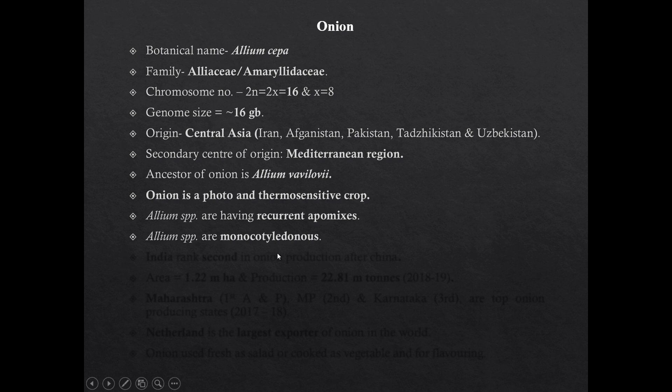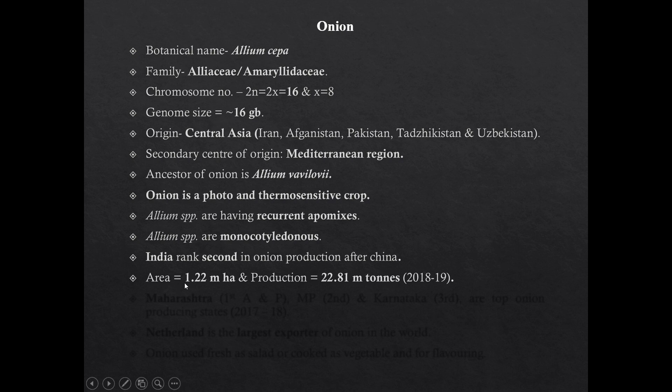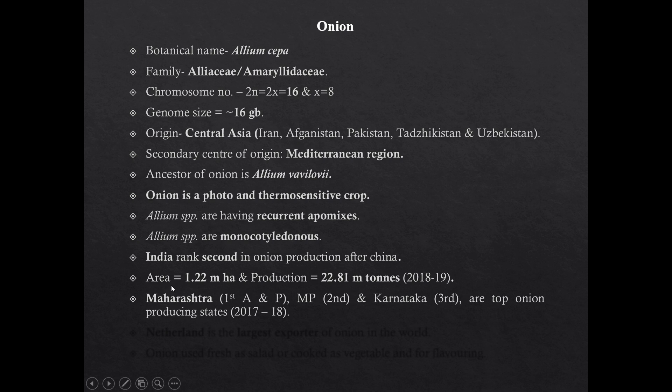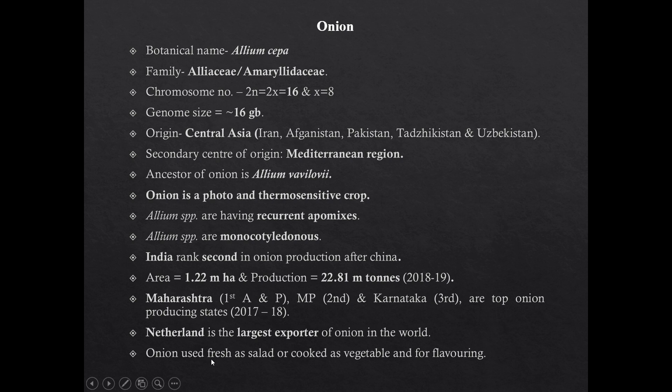Allium species are monocotyledonous in nature. India ranks second in onion production after China. Area of onion cultivation in India is 1.22 million hectare and production is 22.81 million tons. Maharashtra, MP, and Karnataka are the top onion-producing states in India. Netherlands is the largest exporter of onion in the world.